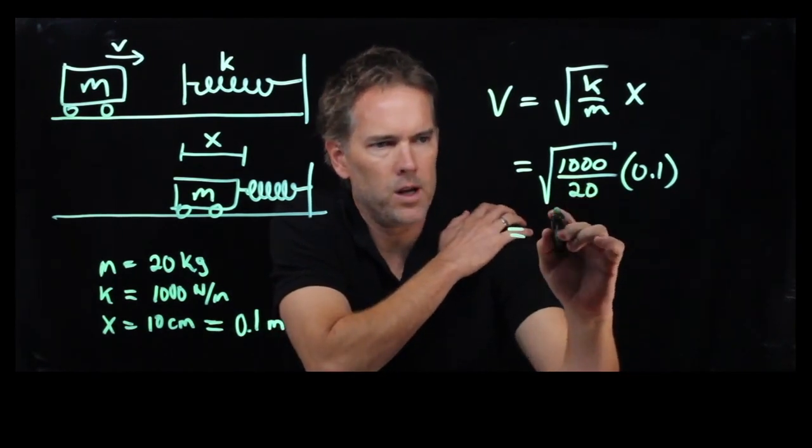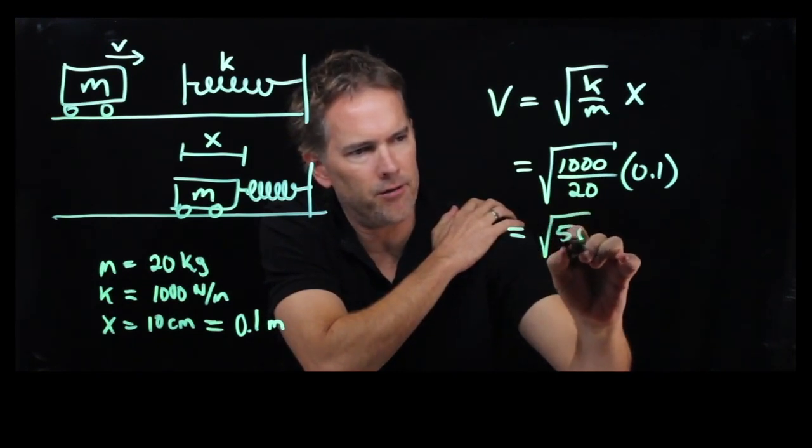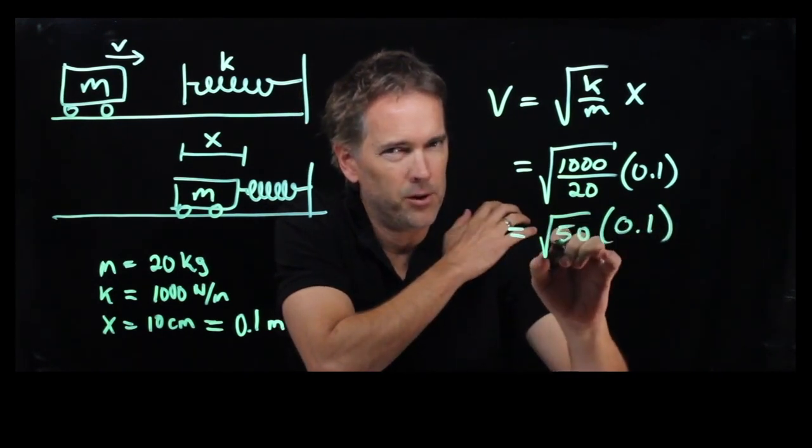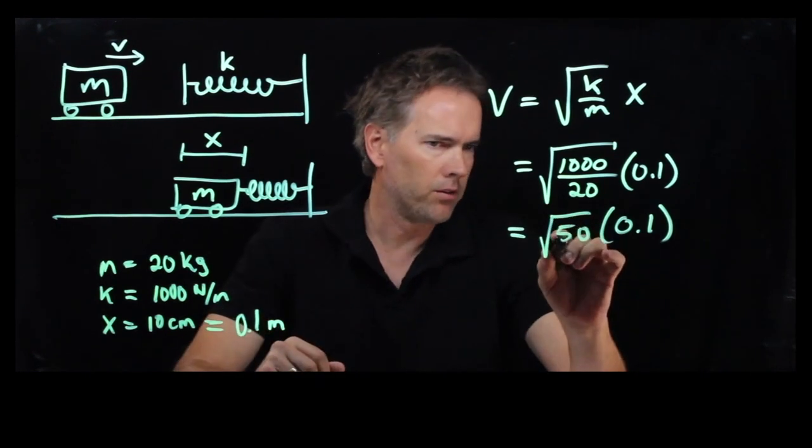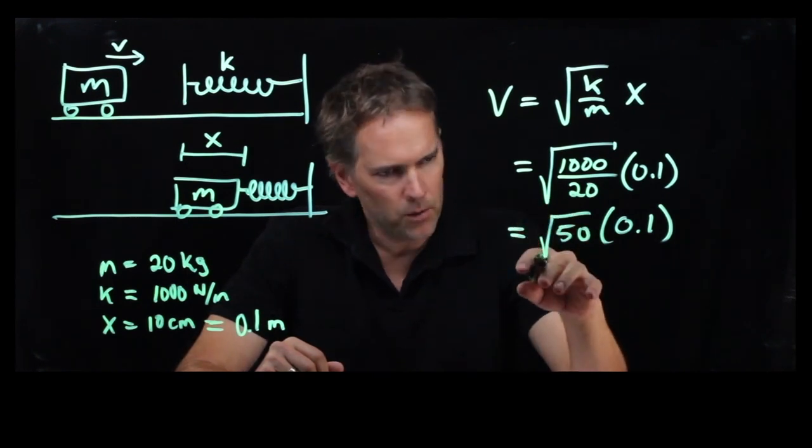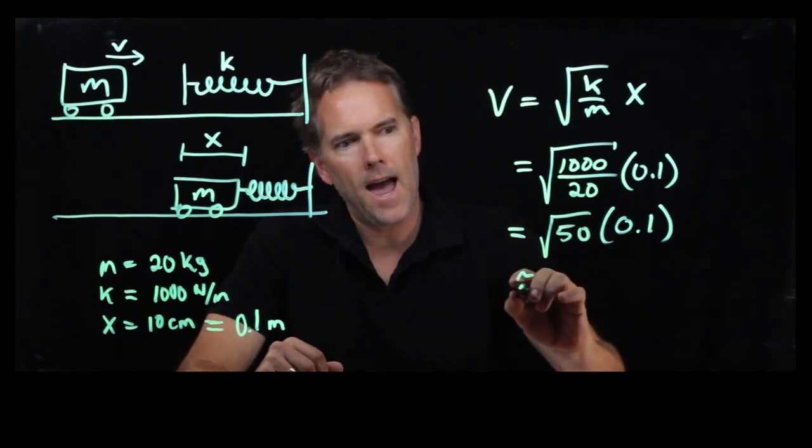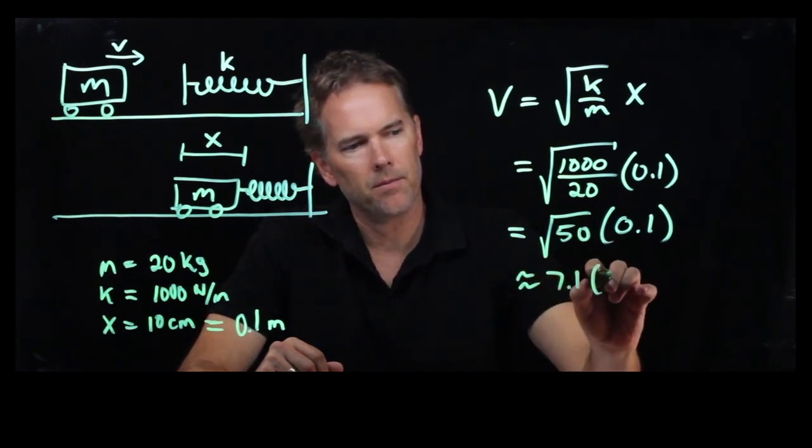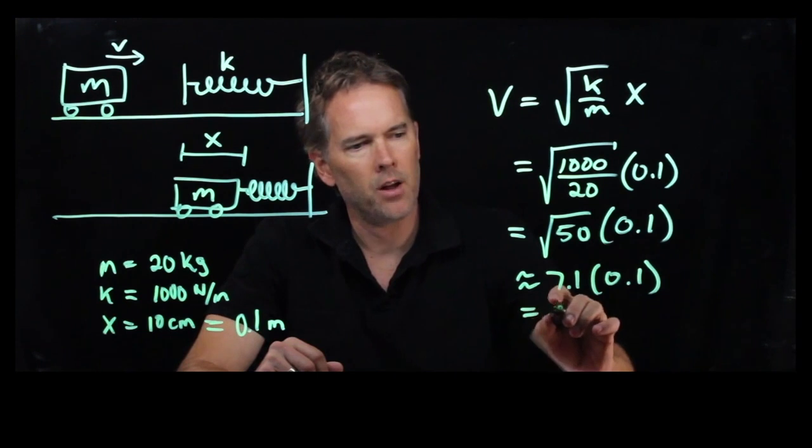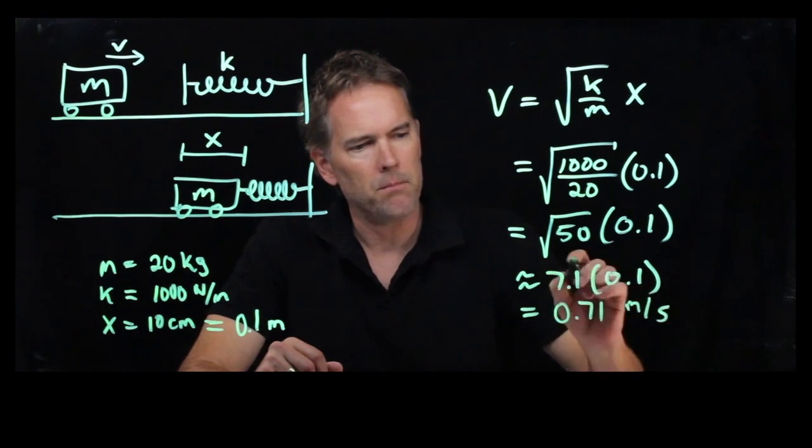So what do we get here? Square root of a thousand over 20, that's the same as a hundred over two, which is the same as the square root of 50. We've got a 0.1 hanging out there. You can almost do this in your head, because 50 is really close to 49, and we know that the square root of 49 is 7. So let's take 7 and we'll just add a little bit to it. 7.1, and we're going to multiply that by 0.1, so this becomes 0.71 SI units, meters per second.